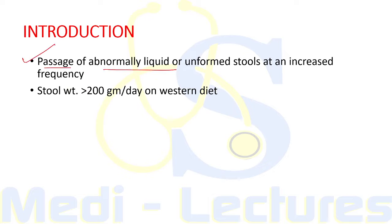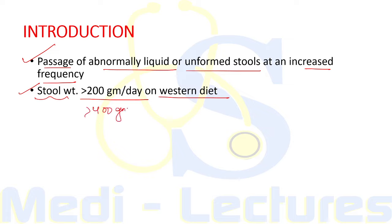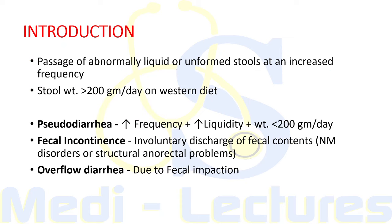Diarrhea is defined as the passage of abnormally liquid or unformed stools at an increased frequency. To be considered as diarrhea, the stool weight should be more than 200 grams or ml per day on a typical Western diet. Since the Indian diet has a high amount of fibers, more than 400 grams per day on an Indian diet will be considered as diarrhea.